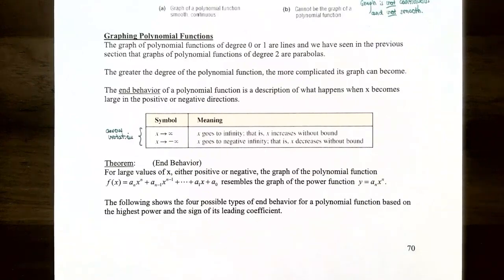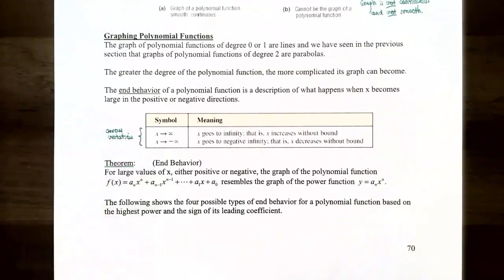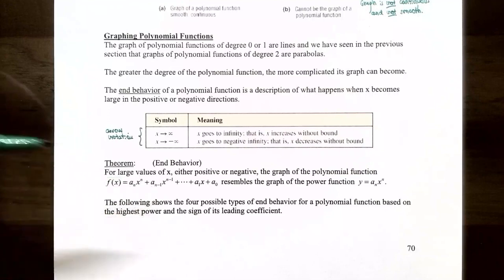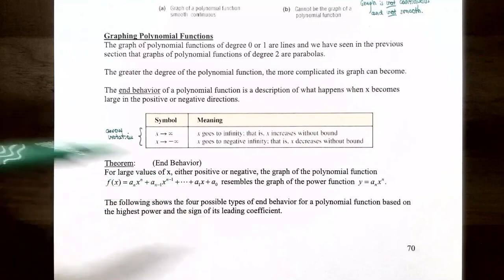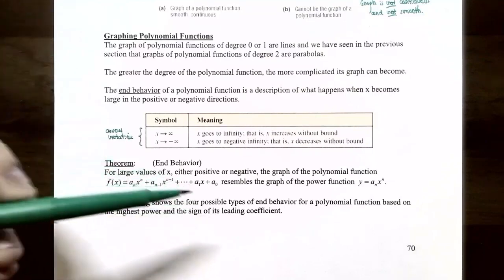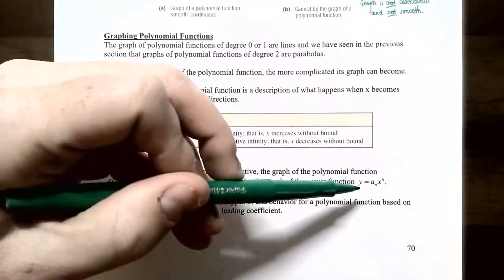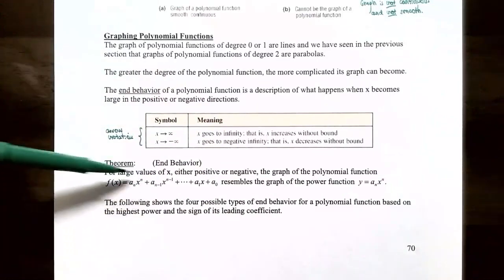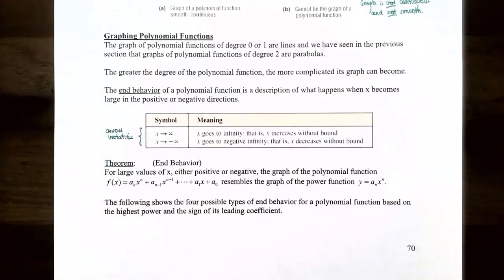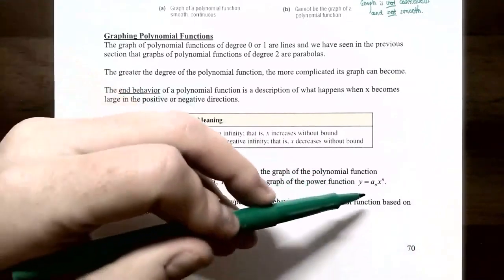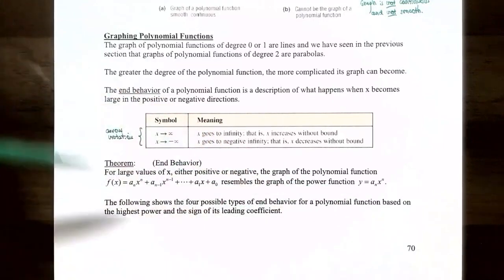A theorem tells us how to find the end behavior of a polynomial function's graph. For large values of x — positive or negative — the graph of a polynomial function f(x) equals a sub n times x to the n plus lower-degree terms resembles the graph of the power function y equals a sub n times x to the n. In other words, the end behavior is always determined by the leading term of the polynomial.